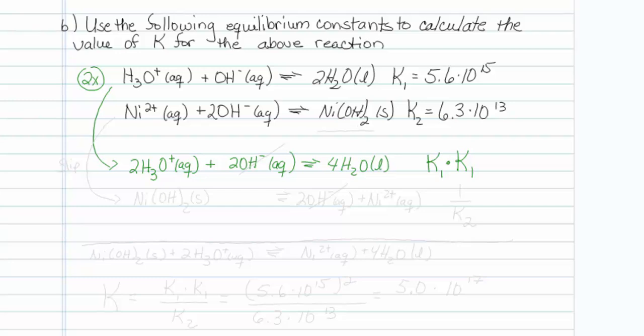Now, for the second reaction, it looks like I need to flip it because I noticed that what I want to react, nickel hydroxide, is here on the product side and I want it on the reactant side. So I will flip my reaction.